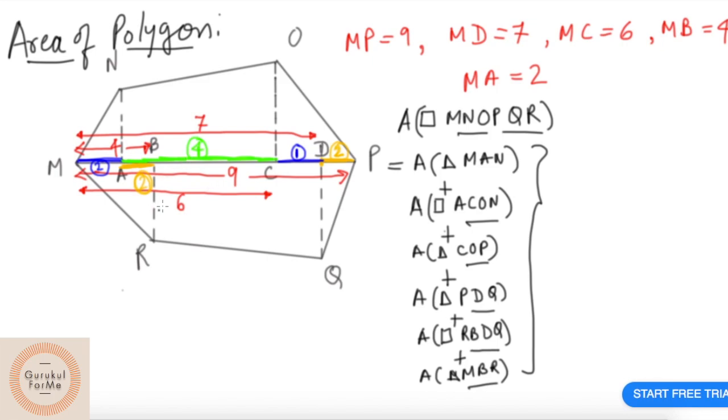We are given that MP is equal to 9, MD is equal to 7, MC is equal to 6, MB is equal to 4, and MA is equal to 2. Now if you put these values here, we should be able to find out what is MA, AC, CD, and DP.